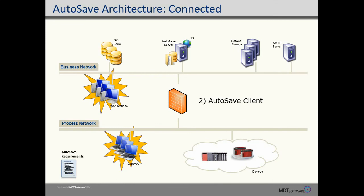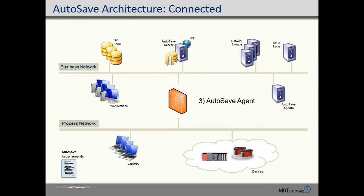The second part of Autosave are the workstations. Laptops and workstations are used to interact with the editor software and to send the changes back to the server. The third component is the agent. There can be more than one for scalability reasons, and these perform unattended or scheduled operations necessary to verify what's in the processor is what Autosave has on file.